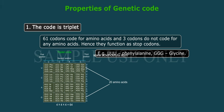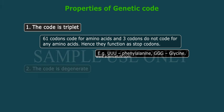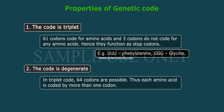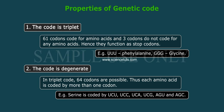Property 2: The code is degenerate. In the triplet code, 64 codons are possible. Thus, each amino acid is coded by more than one codon. For example, serine is coded by UCU, UCC, UCA, UCG, AGU, and AGC.